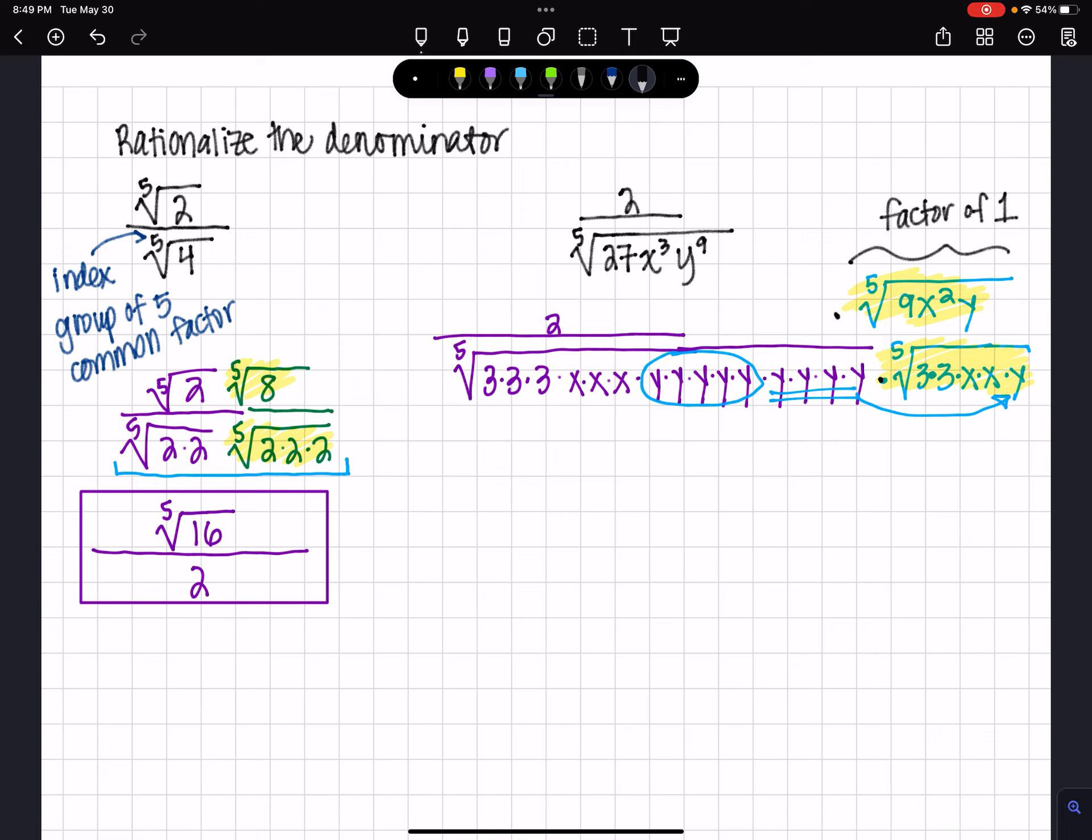So I'm going to change what it looks like, what this original fraction looks like, but not its value. So in the numerator, I'm going to have that 2, that's the original 2, times the 5th root of 9x squared y. And in the denominator, I've got one group of 5 3's, so a 3 will come to the outside.